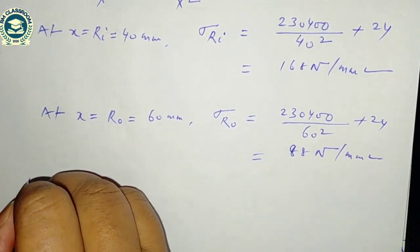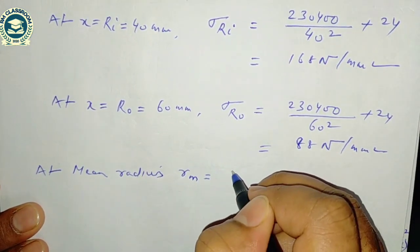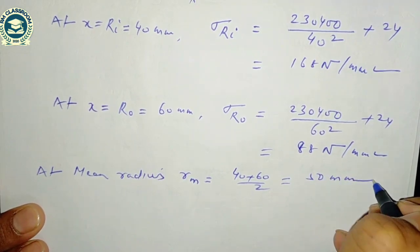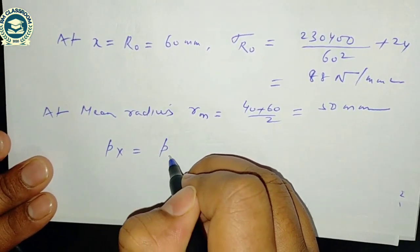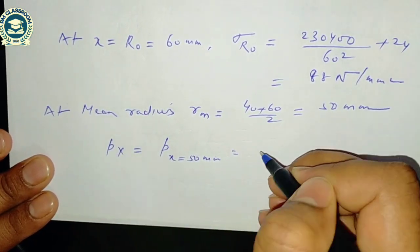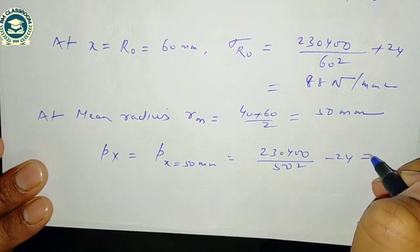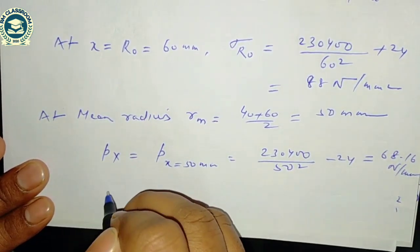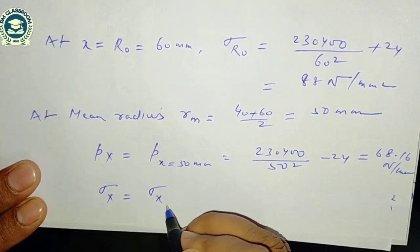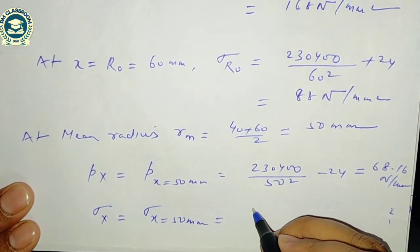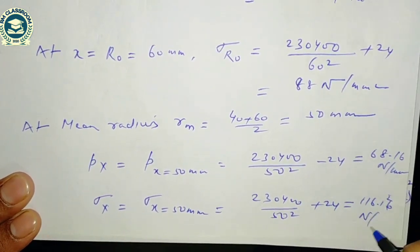At the mean radius Rm = (40 + 60)/2 = 50 mm: radial stress Px = 230400/50² − 24 = 68.16 N/mm². Circumferential stress sigma_x = 230400/50² + 24 = 116.16 N/mm².